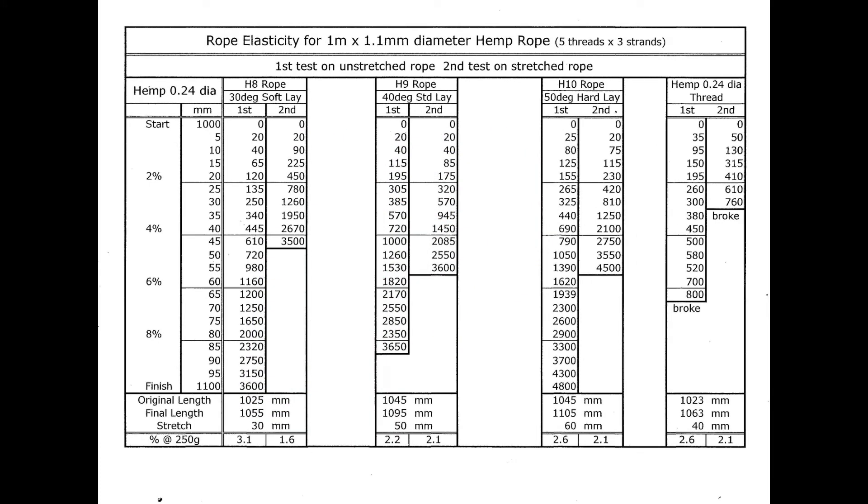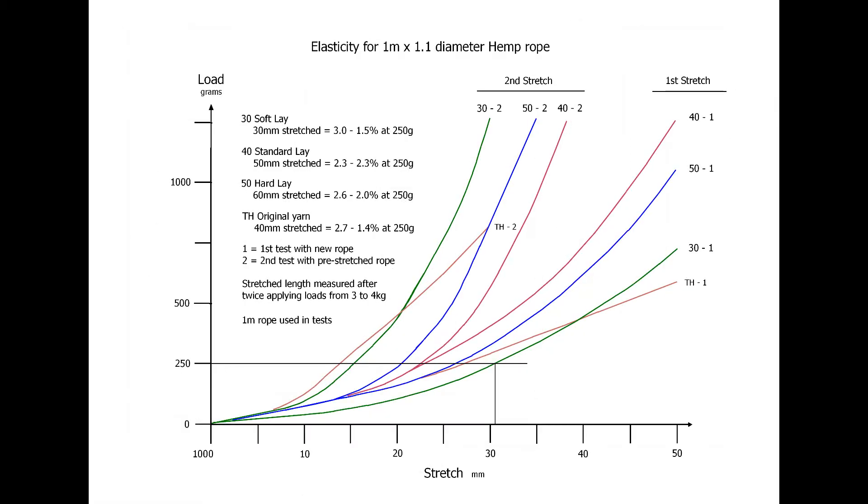Elasticity for 1m x 1.5mm diameter hemp rope. Now to see the effects of altering the lay angle. The same parameters in the last test used with 150 gram tension weight and only hemp rope used. Sometimes you will find ropes quoted as being hard or soft, with hard having a 50 degree lay angle and soft being 30 degrees. Standard is 40 degrees. Most pictures show this. The original 0.23 diameter yarn is shown as a matter of interest. The packet said it was 0.12.